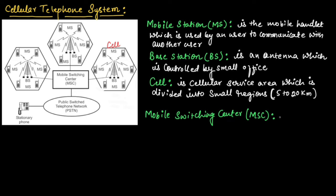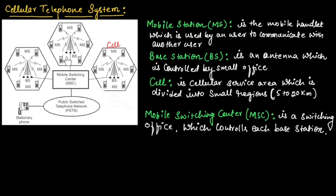The mobile switching center is a switching office that controls each base station. As you can see in this diagram, each base station is controlled by a switching office known as the mobile switching center.